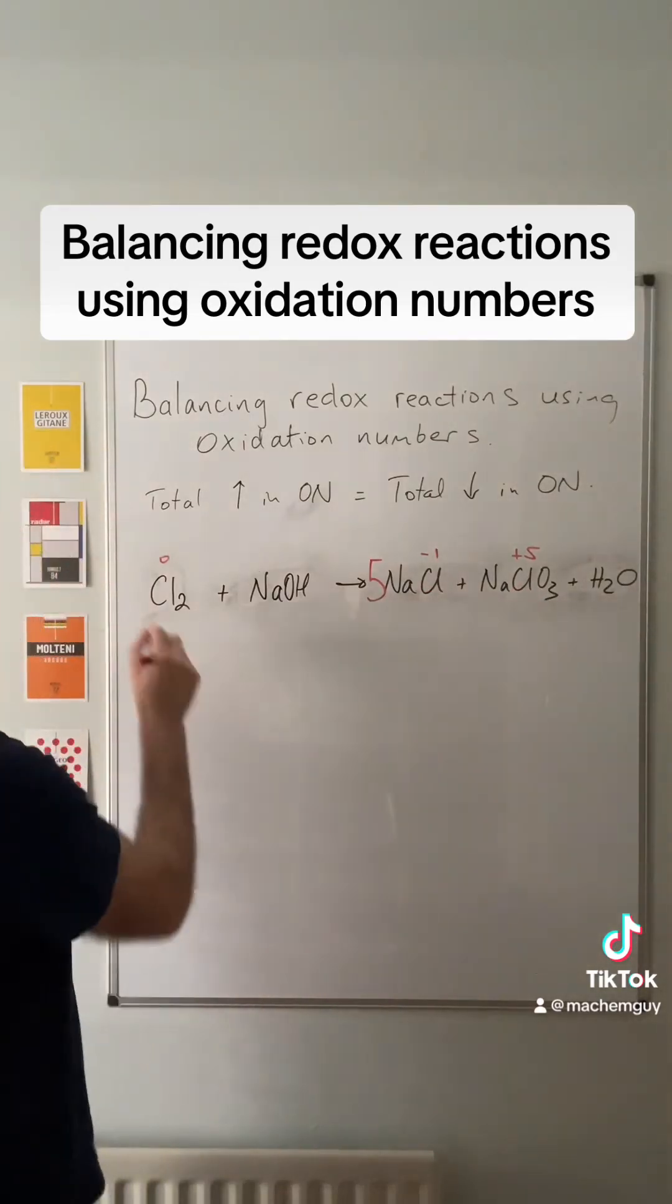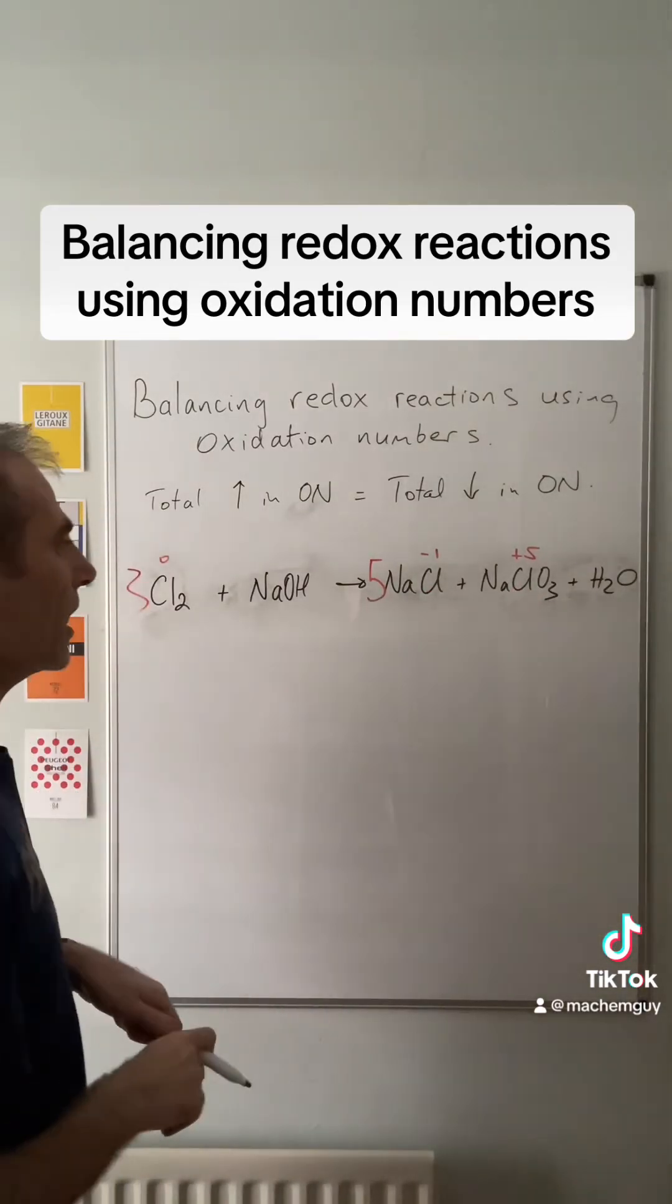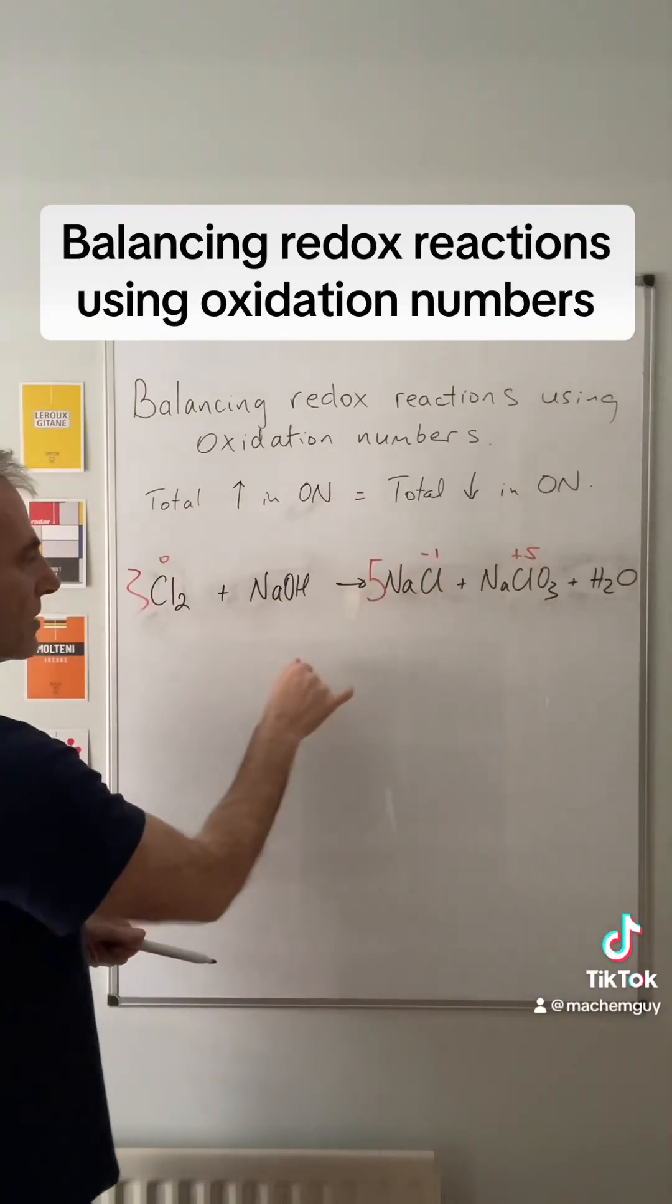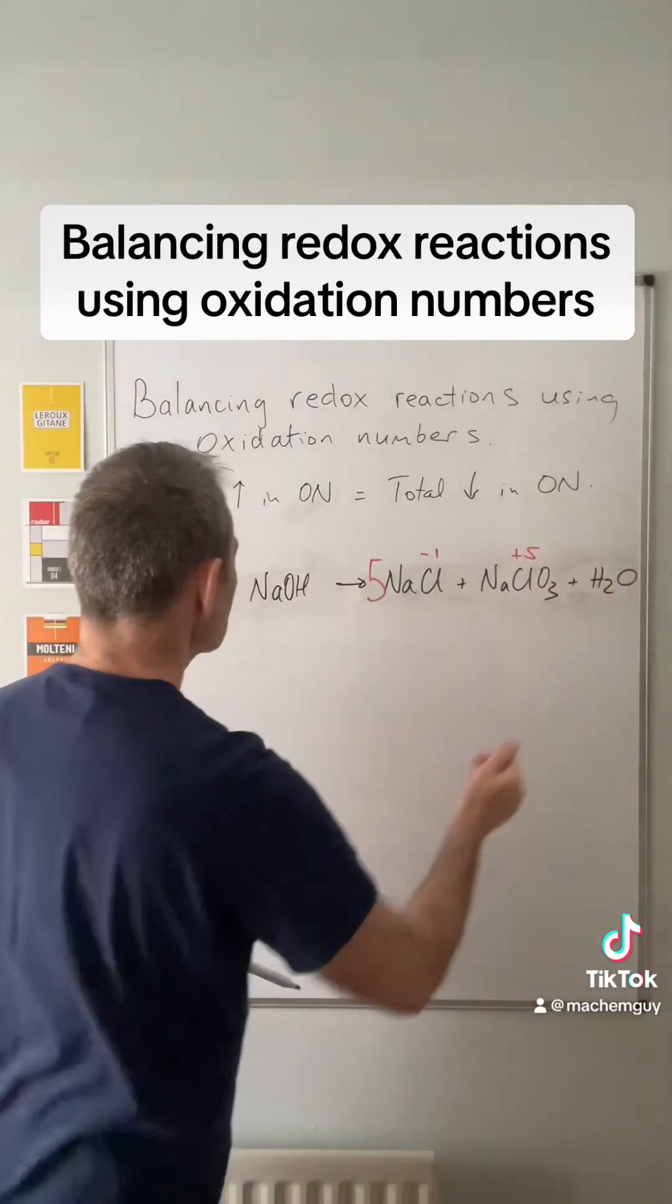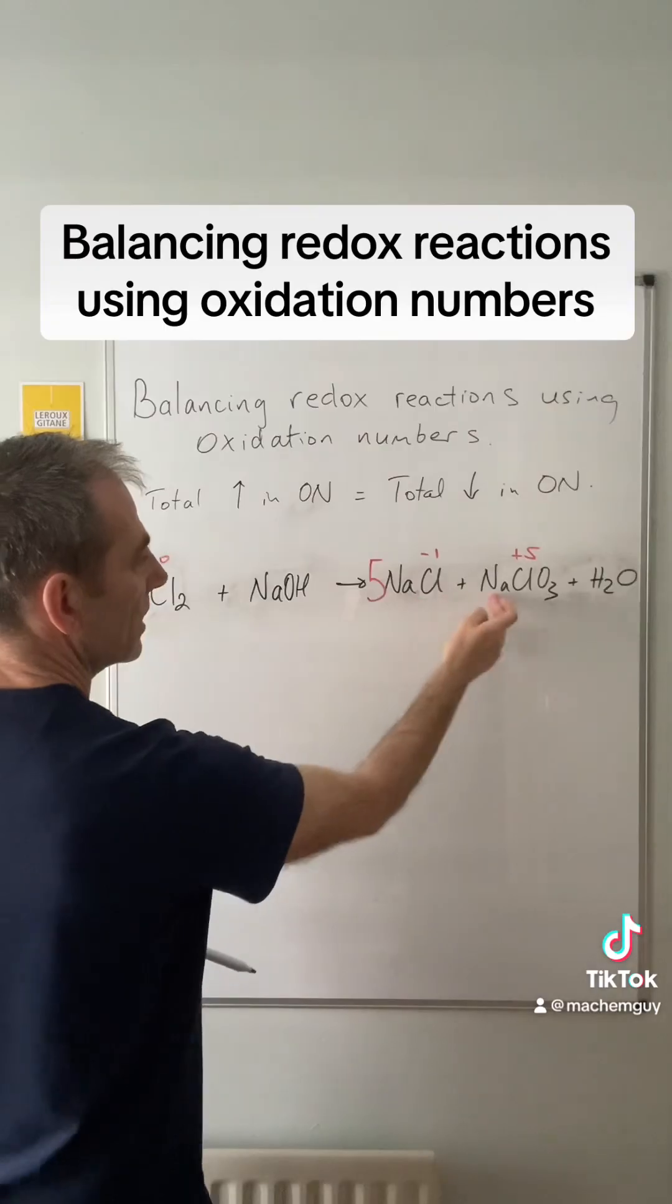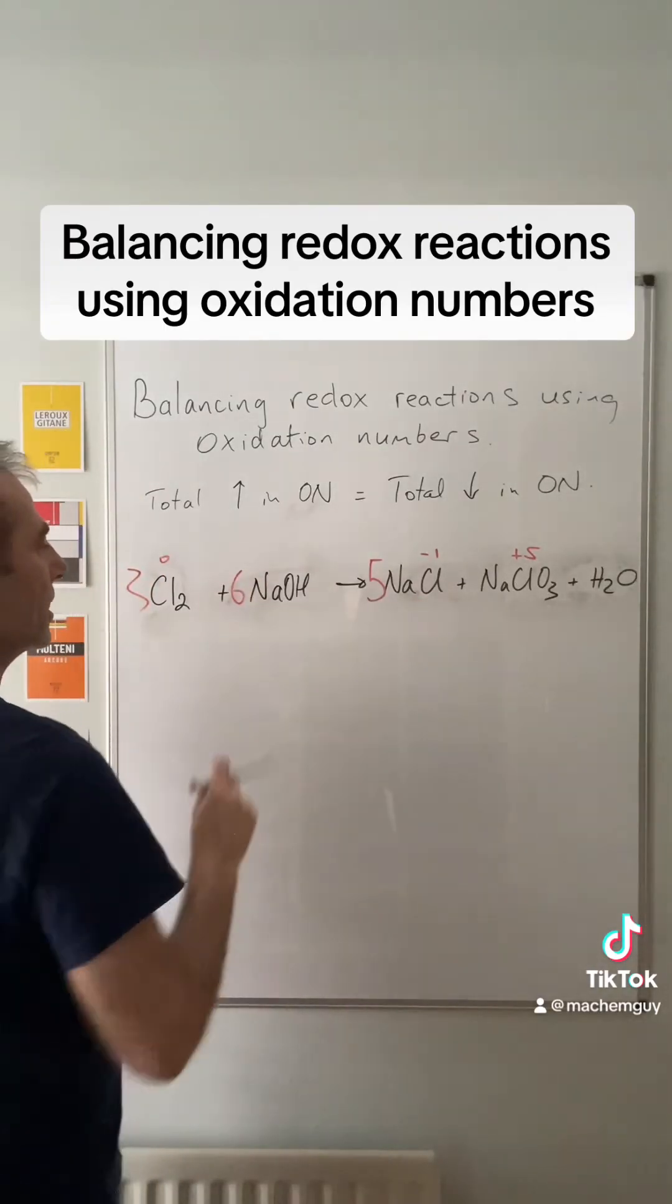Now all we need to do is sort out the sodiums and the H2O. You can see we've got six Na's, so we need six NaOH's.